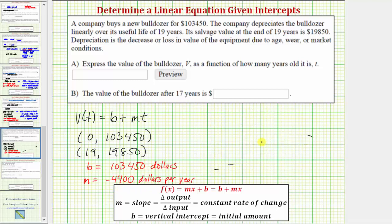So, now we have all the information we need in order to write our equation for V(t). We now know that V(t) is equal to 103,450, and then instead of writing plus negative 4,400t, let's write minus 4,400t. So, this is the answer to part A.